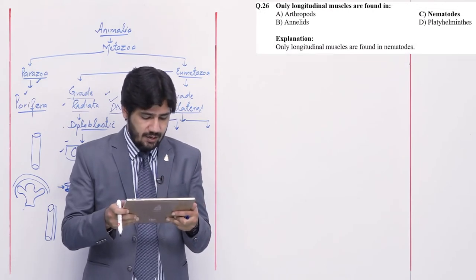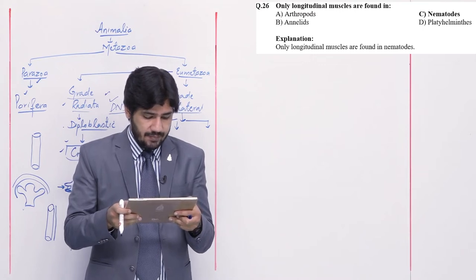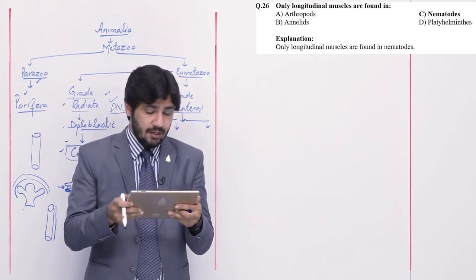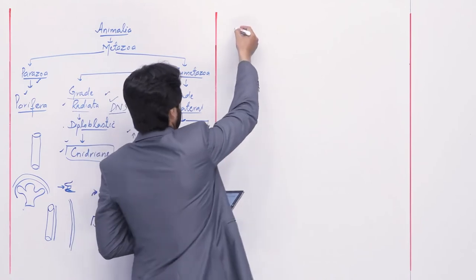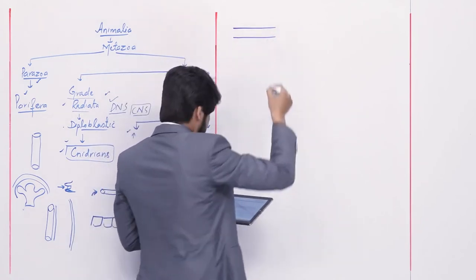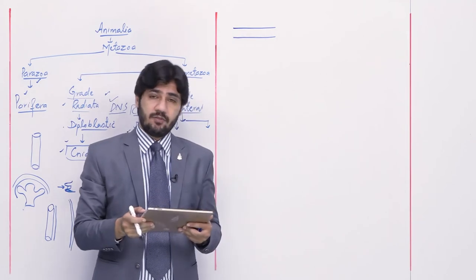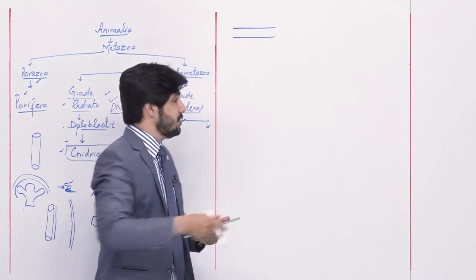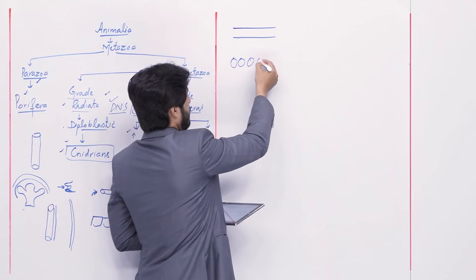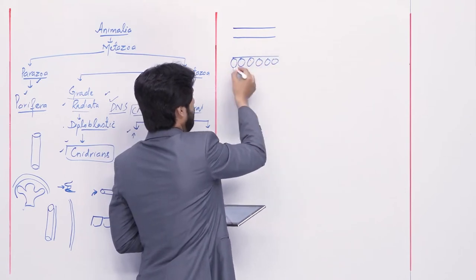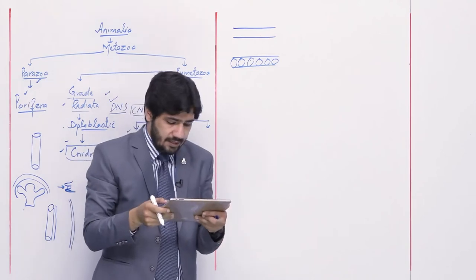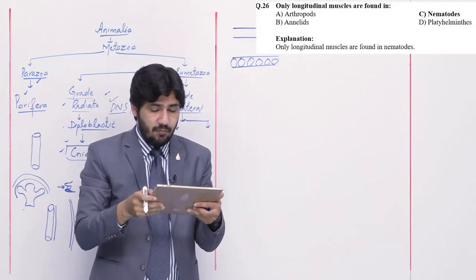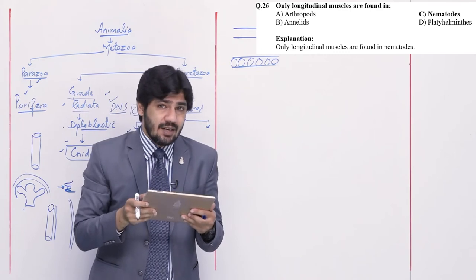Question number 26: only longitudinal muscles are found in — alpha arthropods, beta annelids, charlie nematodes, and delta Platyhelminthes. Arthropods have different types of muscles, not only longitudinal — alpha is not right. Annelids have both circular and longitudinal muscles — beta is not right. Nematodes have only longitudinal muscles — right option is charlie. Platyhelminthes do not have well-developed muscles.